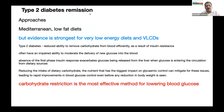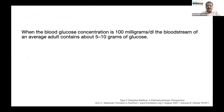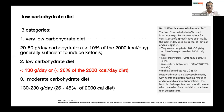Type 2 diabetes reversal can be achieved by various forms of diet — the Mediterranean diet, the low-fat diet — but evidence is strongest for very low energy diets and low carbohydrate diets. Carbohydrate restriction is the single most effective method for lowering blood glucose. When we have a blood glucose value of 10 mmol/L, the bloodstream is carrying only 5 to 10 grams of glucose — so think about how much glucose we need to consume to maintain blood glucose levels; we need not take that much.